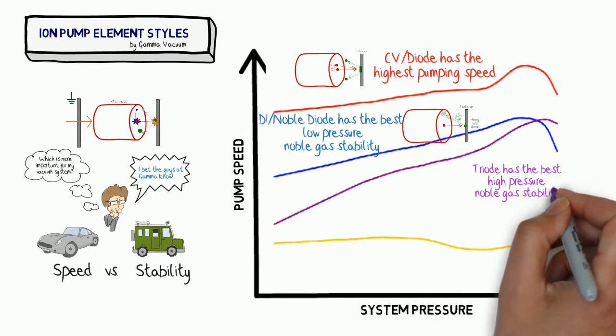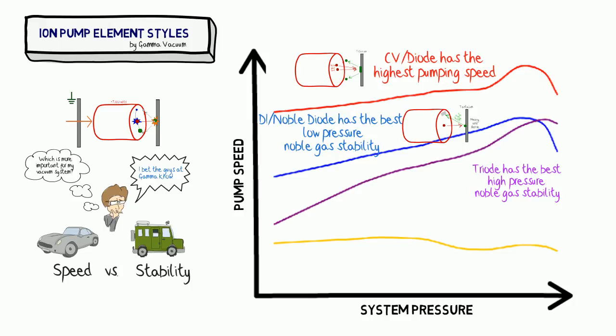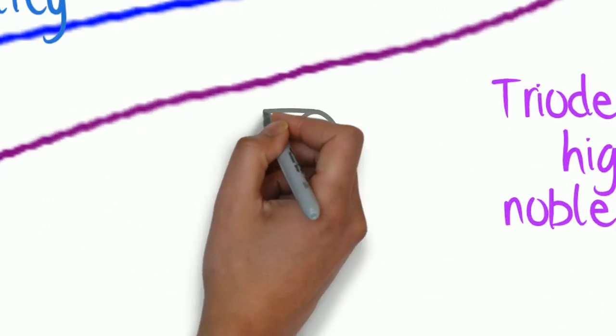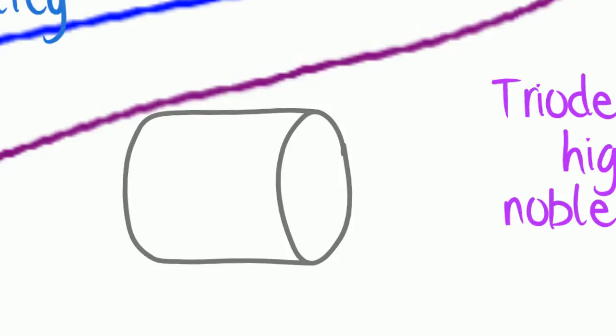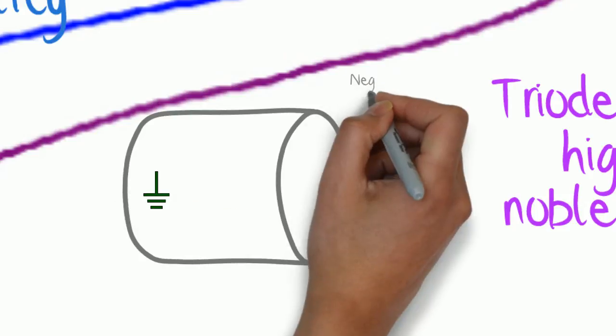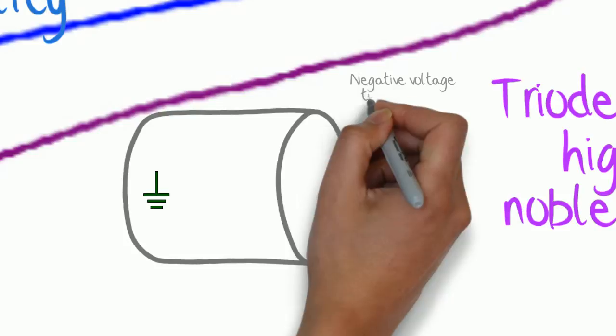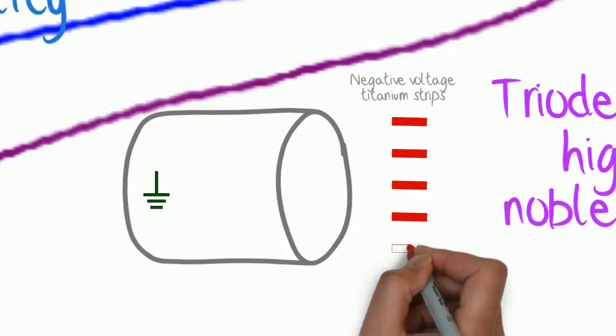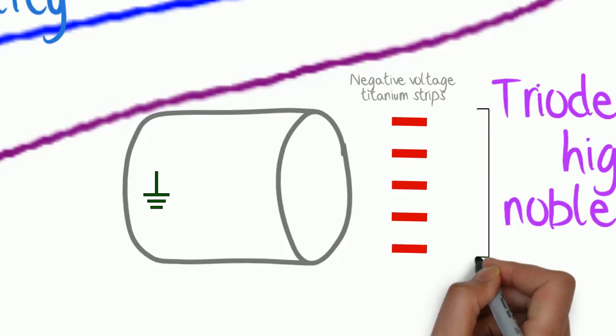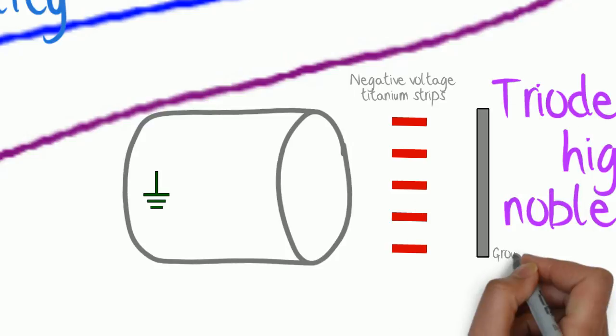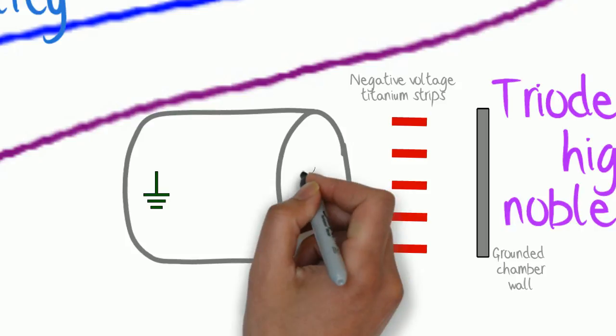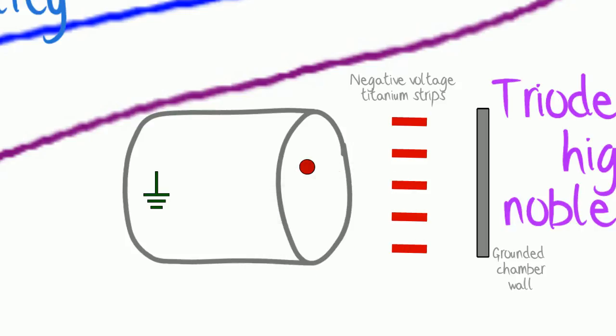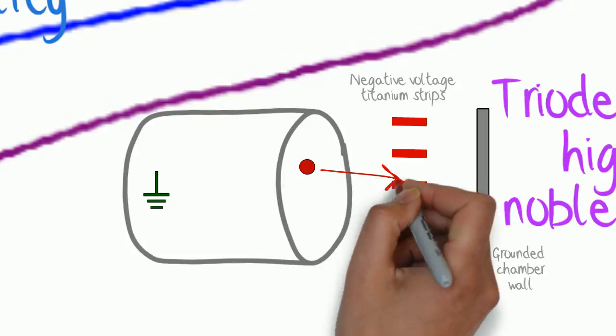The triode has the best high-pressure noble gas stability. The configuration of the triode is a little bit different in that the rings are actually grounded, and we have negative voltage titanium strips as the cathode, represented by the red squares. And on the opposite side of that, we're going to have our vacuum wall.